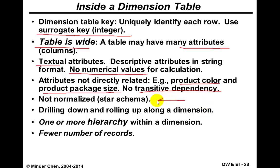In the star schema, dimension tables are not normalized. In the snowflake schema, we may perform some normalization. We can perform drill-down or roll-up operations along a single dimension through something called a hierarchy.